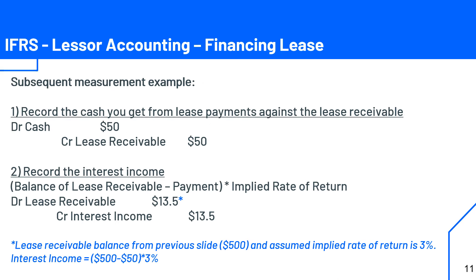For the subsequent measurement example for the lessor: if you received $50 for the item you rented out, you would debit cash for $50 and credit your lease receivable by $50. Next, record the interest income by taking the balance of lease receivables minus payments, then multiplying by the implied rate of return. Assuming the lease receivable balance is $500, subtract the $50 paid, then multiply by the implied rate of 3%, giving $13.50 — debit lease receivable and credit interest income for that amount.